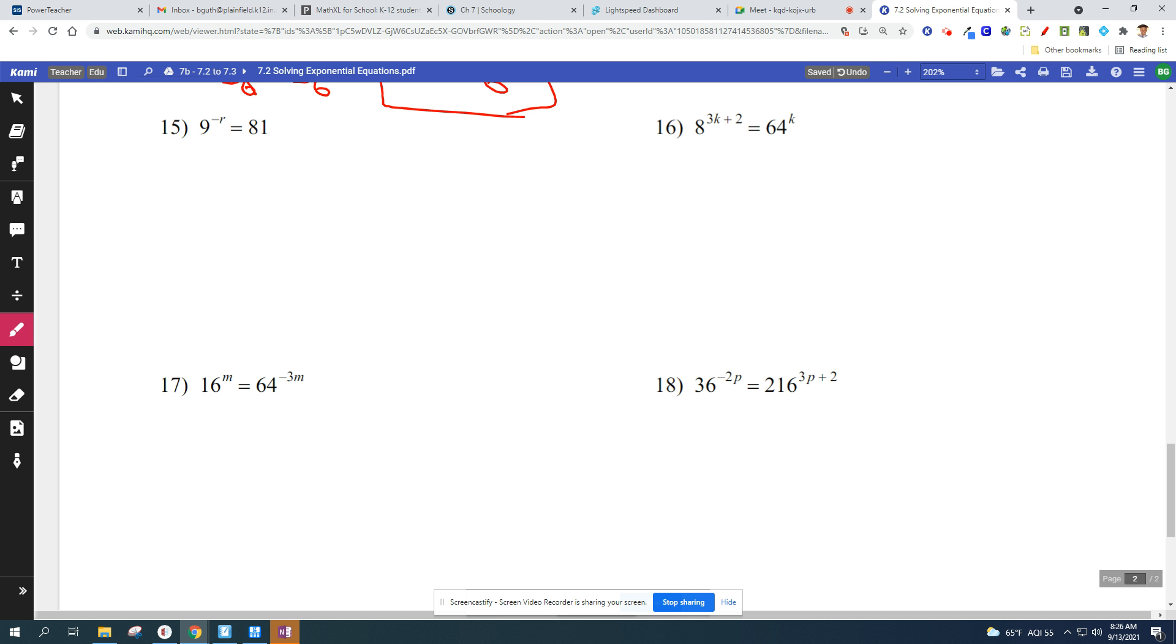Next one. There are multiple ways of doing this problem, but the easiest thing to do is to change the 81 into 9 squared. You could change them both into 3s if you wanted to, but I don't really want to. I don't have to in this case. 9 to the negative r equals 9 squared. So negative r equals 2. I'm going to divide by this negative 1. r equals negative 2.